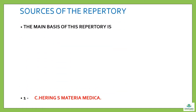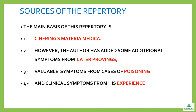The sources of this repertory are: 1. Constantine Herring's Materia Medica. 2. Additional symptoms from later provings. 3. Valuable symptoms from cases of poisoning. 4. Clinical symptoms from the author's own experience.